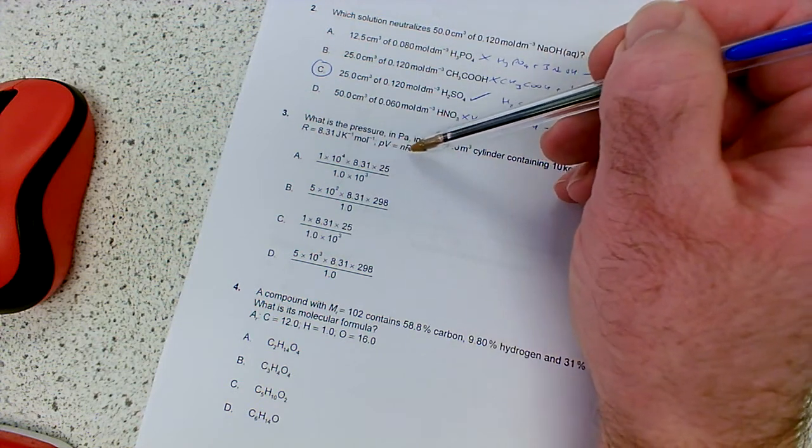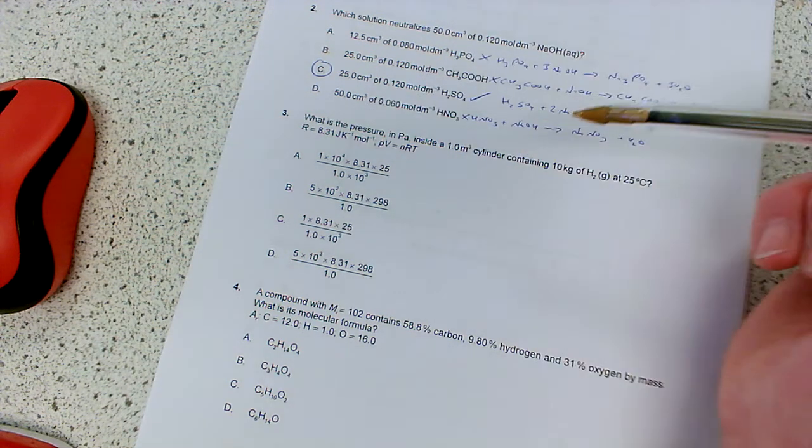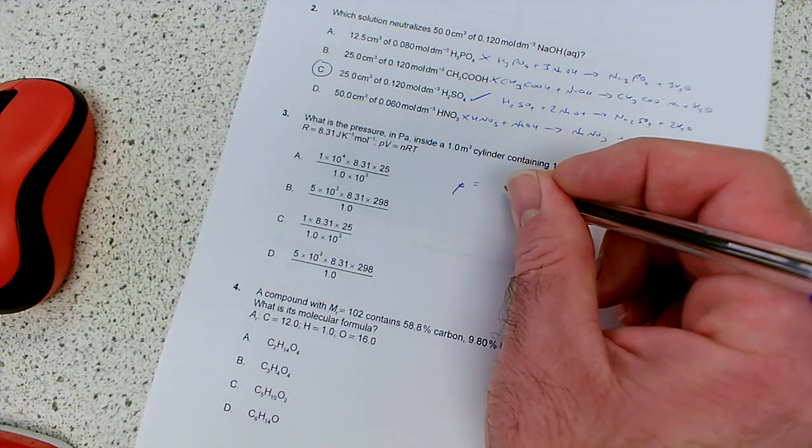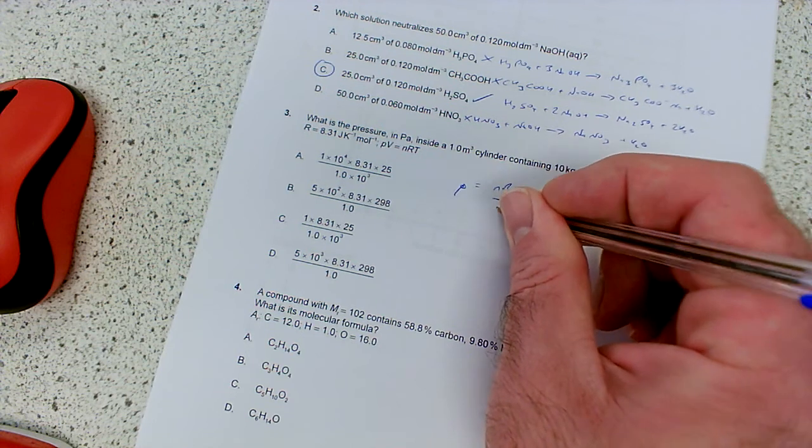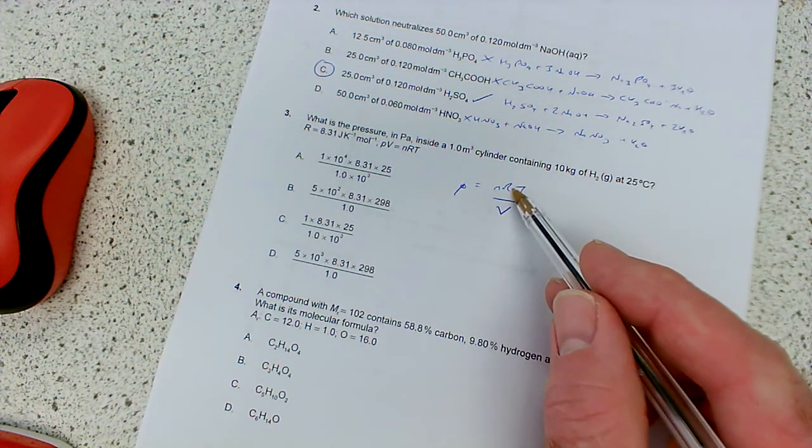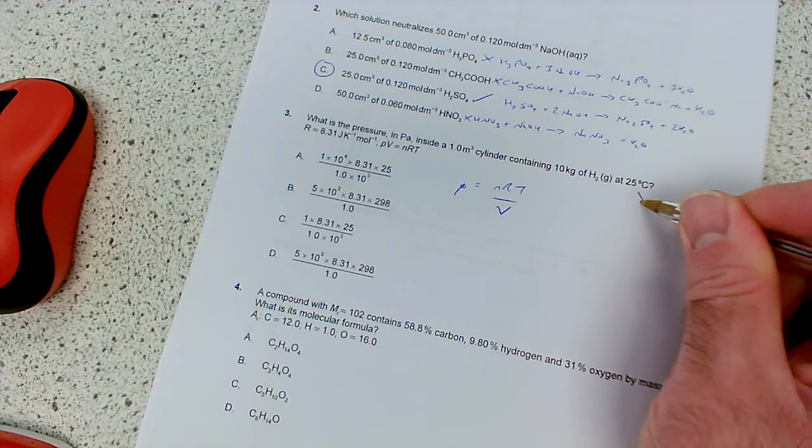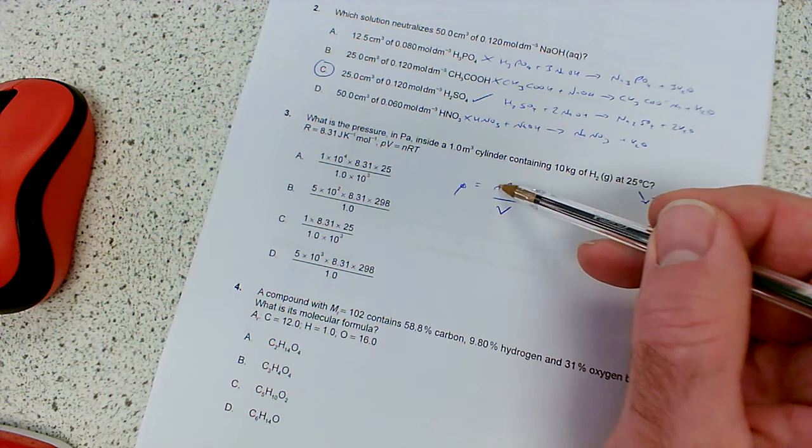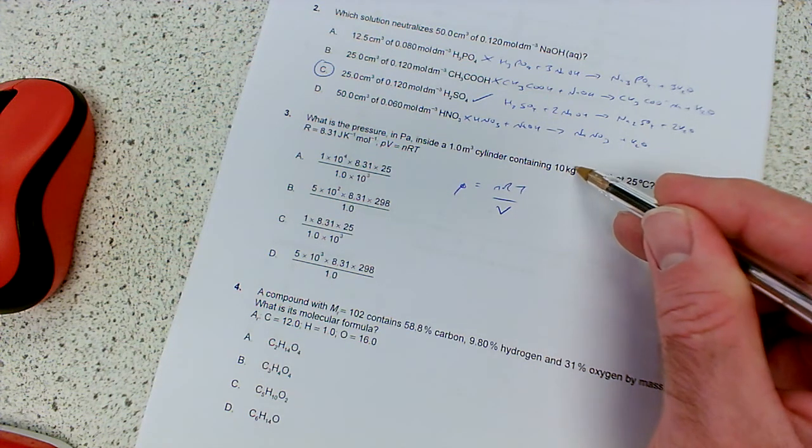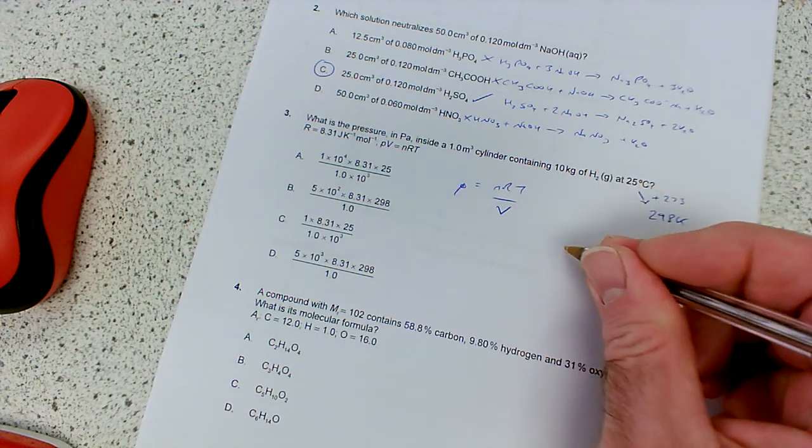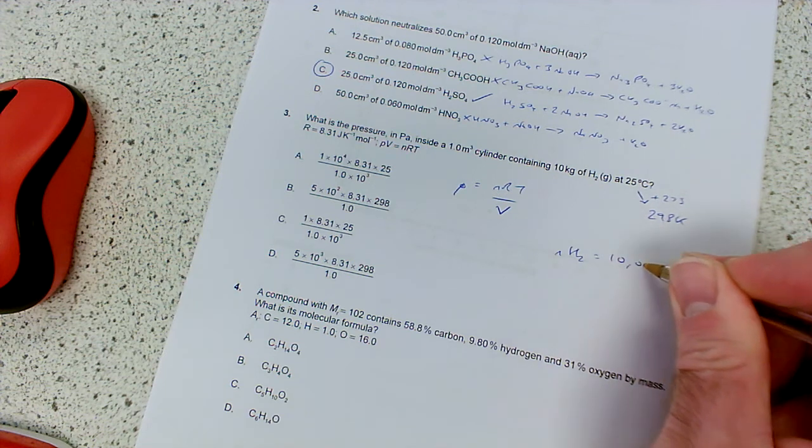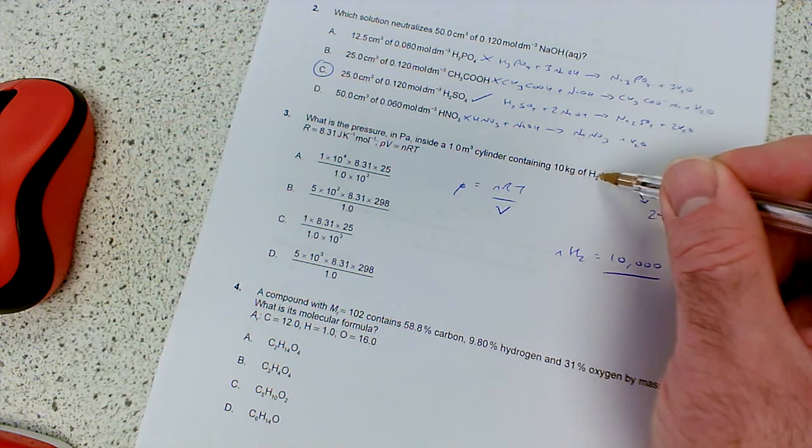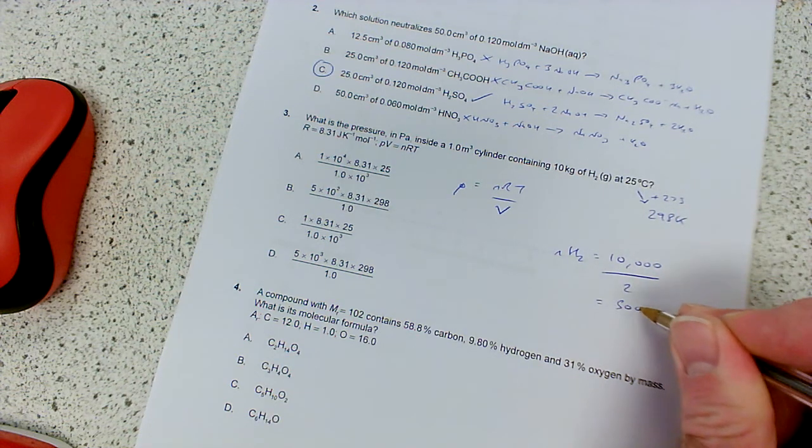Nice to see that it gives us the ideal gas equation, because of course we don't have the data booklet. It also gives us the value for the gas constant, 8.31. So rearranging to find pressure, well pressure equals NRT divided by V. So we know what R is, it's 8.31. We know what temperature is in Kelvin. We've just got to add 273 to that, so that would be 298 Kelvin. We need to know the number of moles of hydrogen. So the number of moles of hydrogen is 10 kilos, so that's 10,000 grams, divided by the relative formula mass of hydrogen using our periodic table. So that's 2 times 1 basically. So divided by 2, so that comes to 5,000.